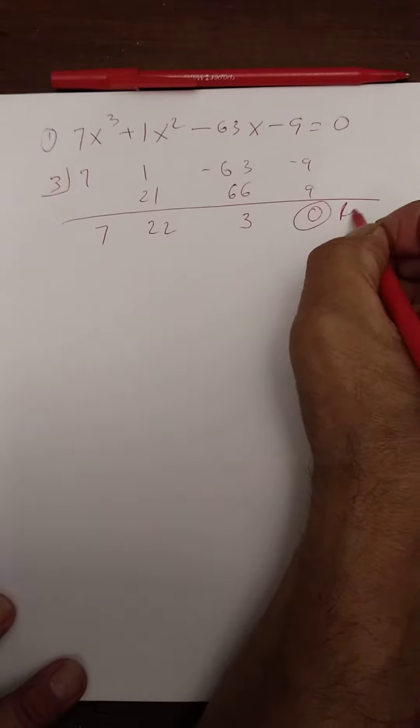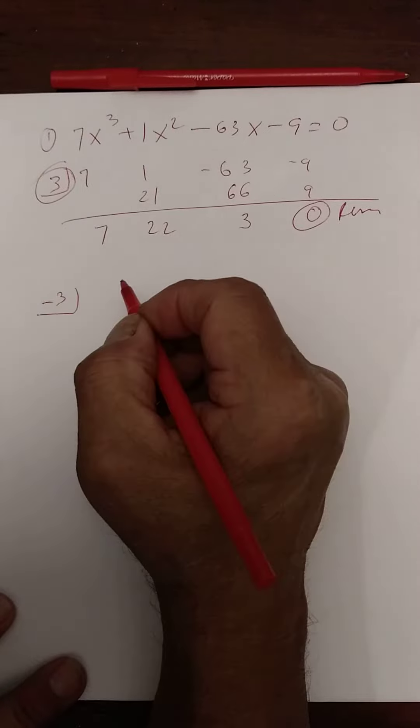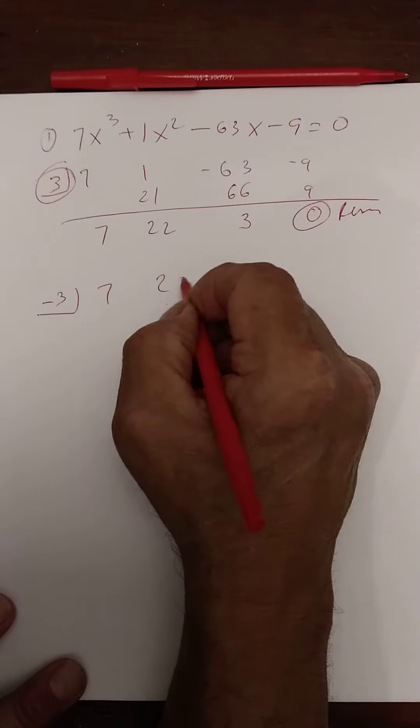So this is an answer. Let's try negative 3 next. You have 7, 22, and 3.